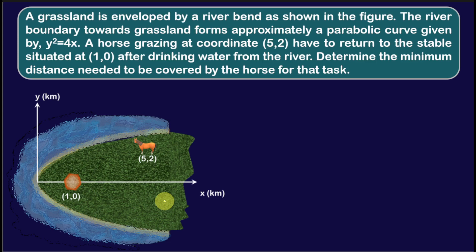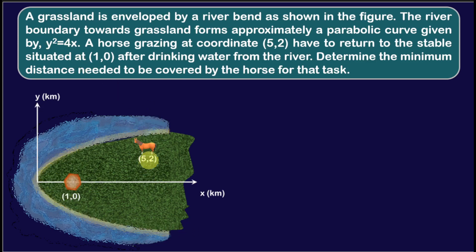This problem says that there is a river whose inner boundary is on a curve defined by y² = 4x. According to this curve, we can say that this is a parabolic curve. And here at the position of (5, 2), there is a horse that is grazing and it has to return to the stable at coordinate (1, 0), which is a special point.